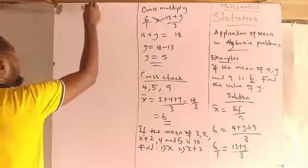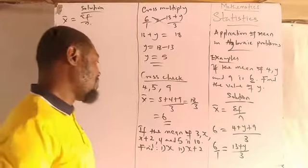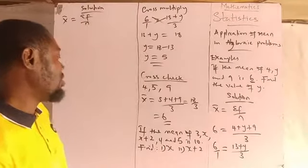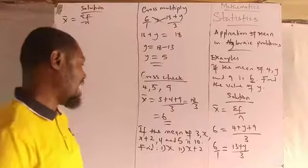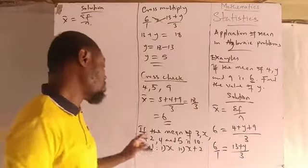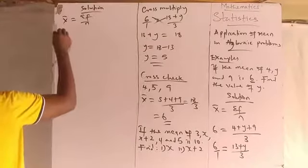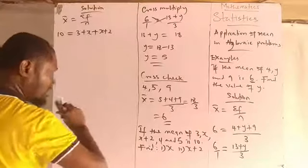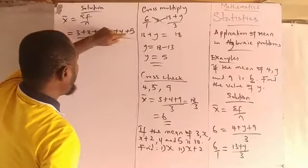Solution: state the formula — mean equals summation f over n. From the question, we have the numbers 3, x, x plus 2, 4, and 5, and the mean is 10. Remember, x plus 2 is a number on its own, so there are five numbers — n equals 5. We write: 10 equals 3 plus x plus (x plus 2) plus 4 plus 5, all over 5.